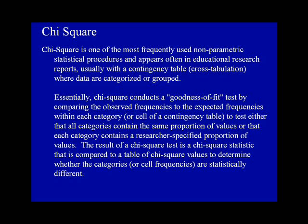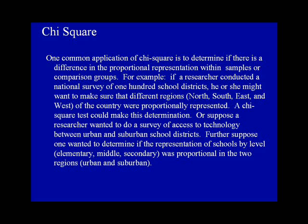One common application of Chi-square is to determine if there is a difference in the proportional representation within samples or comparison groups. For example, if a researcher conducted a national survey of 100 school districts, he or she might want to make sure that different regions — the north, south, east, and west of the country — were proportionally represented.